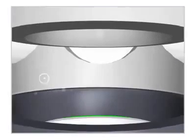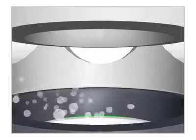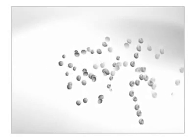Vapor bubbles form in the liquid when the pressure falls to near the level of the liquid's vapor pressure. When the pressure recovers downstream, the vapor bubbles implode and return to liquid form.